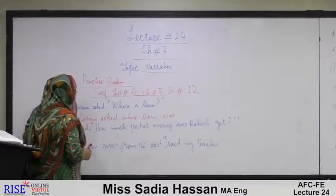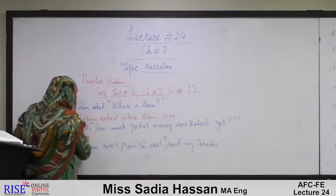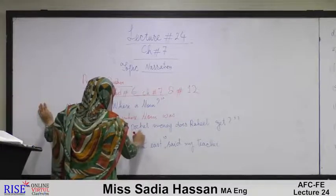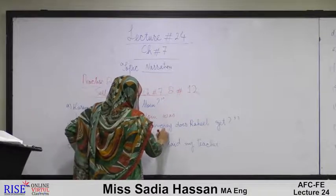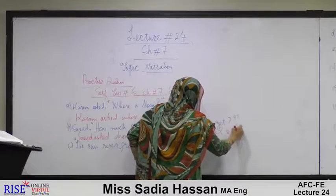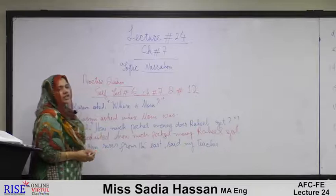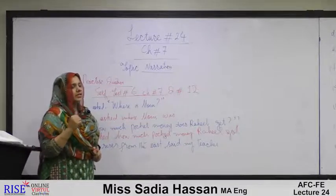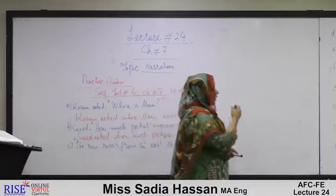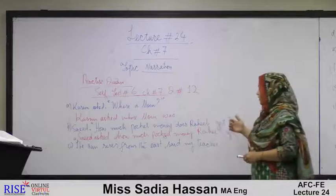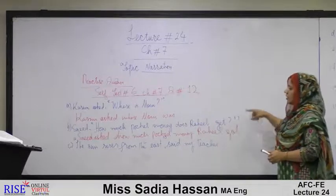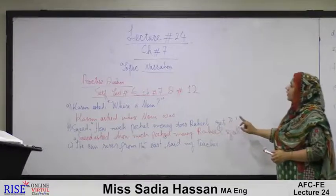Sentence b: Saeed asked, 'How much pocket money does Raheel get?' Changed to: Saeed asked how much pocket money Raheel got. 'Does' is used as a helping verb to construct the interrogative sentence — it is not changed into 'did.' Instead, the overall statement being simple present changes to simple past: 'get' becomes 'got.'